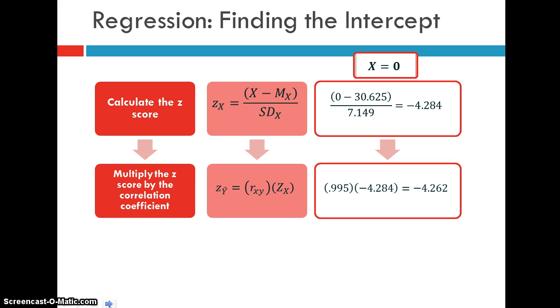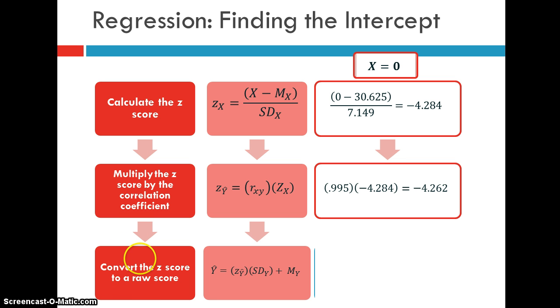So lastly, we're going to take that negative 4.262 and we need to put it back into the scale for our y variable, our raw score scale. So we're going to convert that z score to a raw score. So y hat equals the z of y hat times the standard deviation of y plus the mean of y. And if we substitute in those values, we find that the predicted y for when x is 0 is negative 15.937.